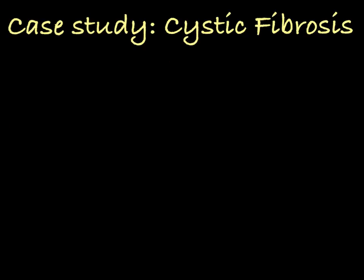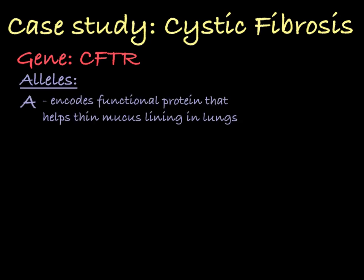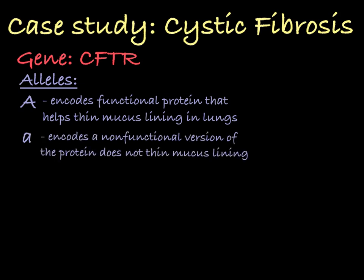In these examples, we will focus on cystic fibrosis. Cystic fibrosis is associated with the CFTR gene that encodes a protein that helps thin the mucus lining of the lungs. The dominant allele of this gene, let's call it big A, codes for a functional protein, and the recessive allele, let's call it little a, codes for a non-functional protein.